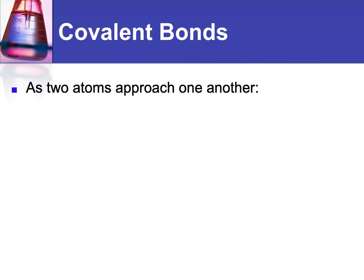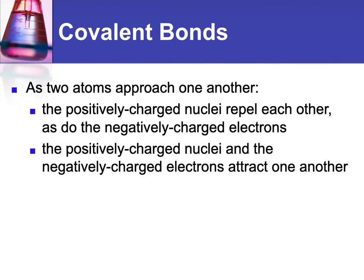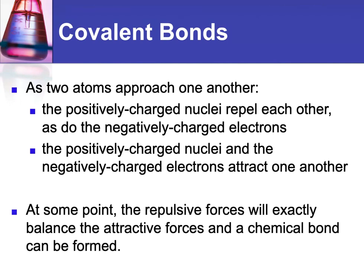So how does a covalent bond form? As the two atoms approach one another, their positively charged nuclei are repelling each other — the two nuclei are repelling, and all their electrons are repelling each other. And then the positively charged nuclei and the negative electrons are attracting one another. So there's repulsion and attraction going on at the same time. And at some point, those two forces are going to balance out. The repulsion and the attraction will be balanced, and a chemical bond can be formed.